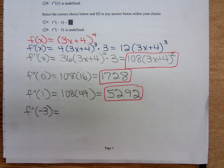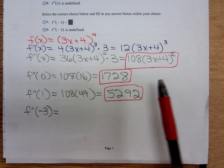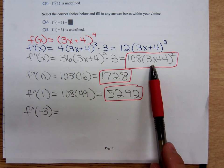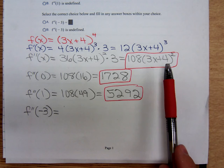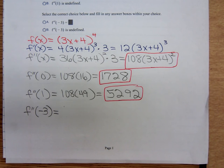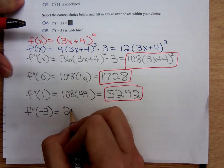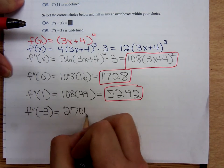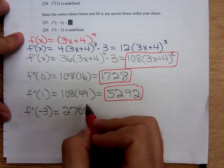Finally, f double prime at negative 3. Plugging in negative 3, that would be negative 9 + 4, that's negative 5. Negative 5 squared is 25, so it's 108 times 25, which gives me 2700 for my final answer.